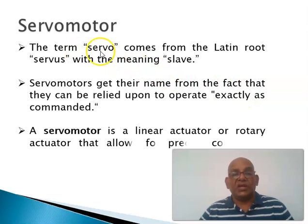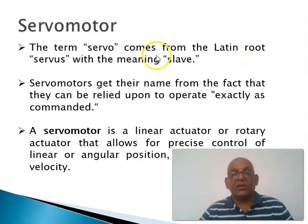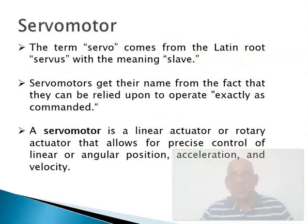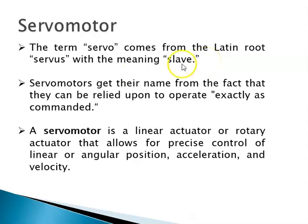The term servo comes from the Latin root 'servus,' which means slave. Servo motors got their name from the fact that they are sturdy and can be relied on to operate exactly as commanded. A servo motor is a linear or rotary actuator that allows for precise control of linear or angular position, acceleration, or velocity.